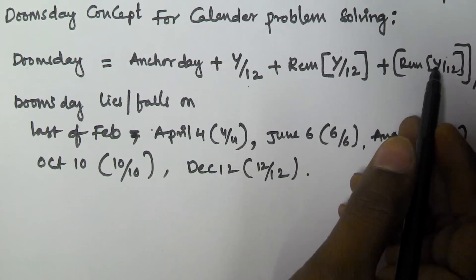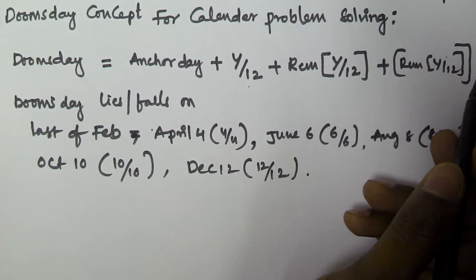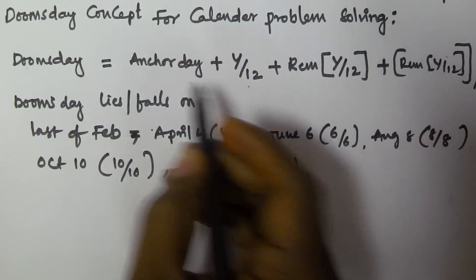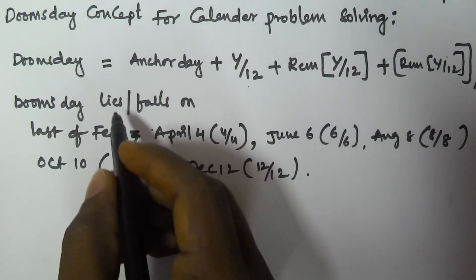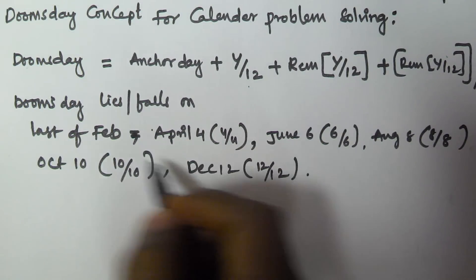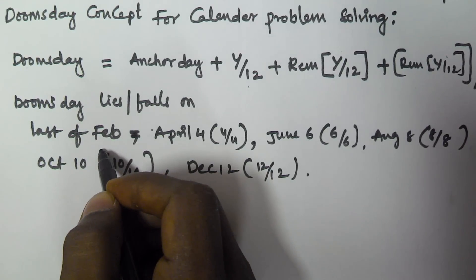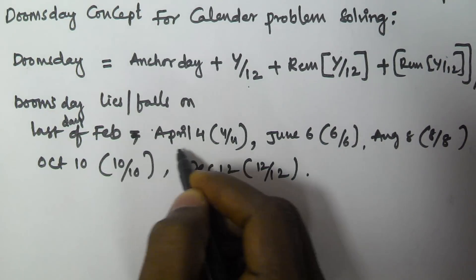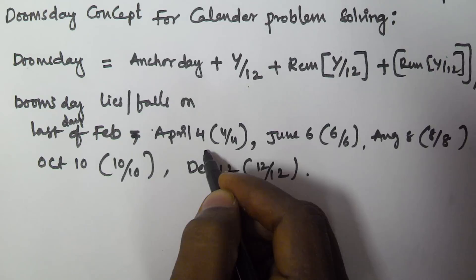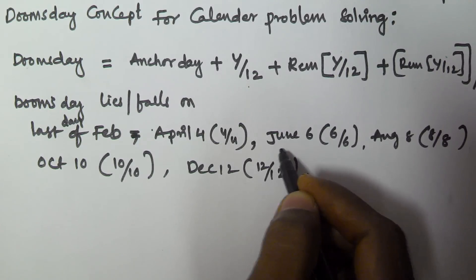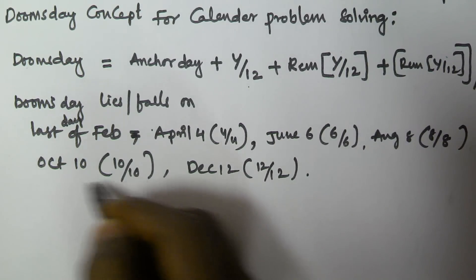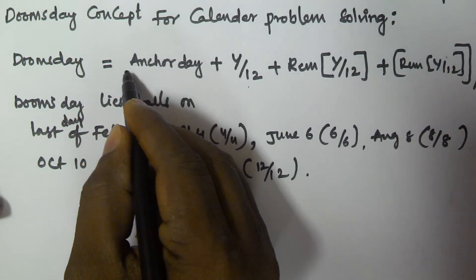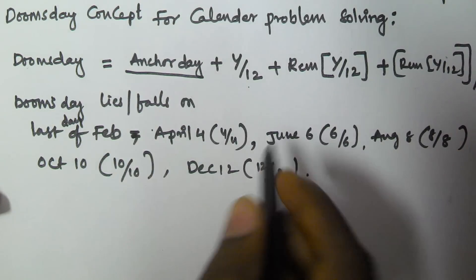So to find the Doomsday we use: Anchor Day plus year by 12, plus remainder of year by 12, plus remainder of year by 12 divided by 4. Whatever Doomsday we find falls on the last day of February, April 4th, June 6th, August 8th, October 10th, and December 12th.